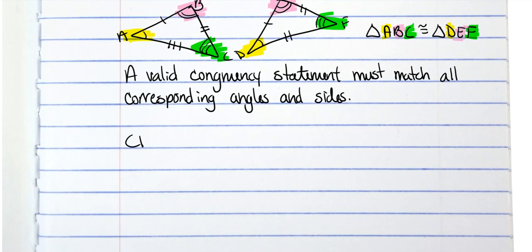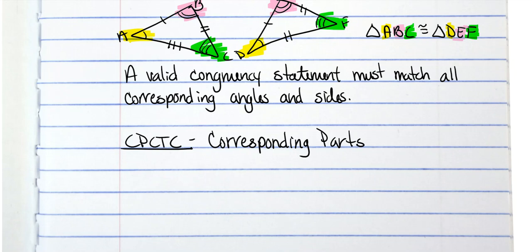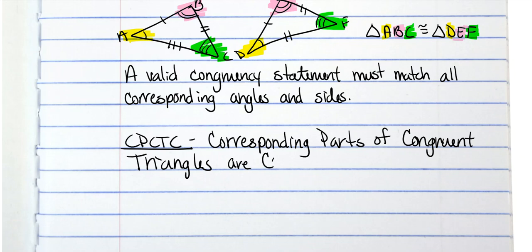Then we have CPCTC, which stands for Corresponding Parts of Congruent Triangles are Congruent — those are all the first letters of everything except 'of' and 'are.' All that says is if we know two triangles are congruent, then we know every pair of their sides and angles are also congruent.